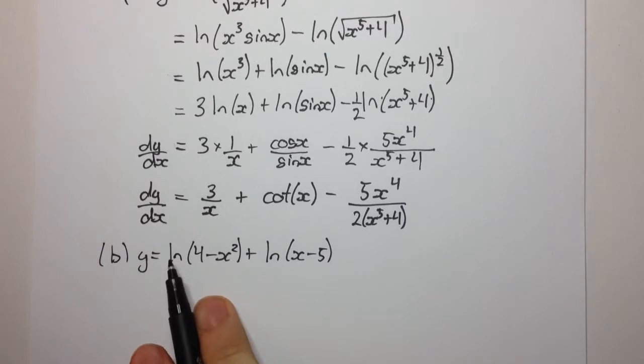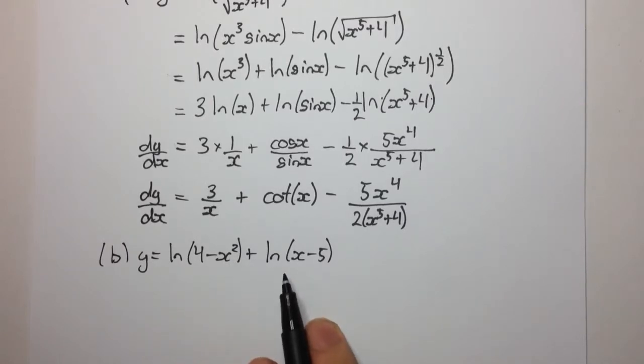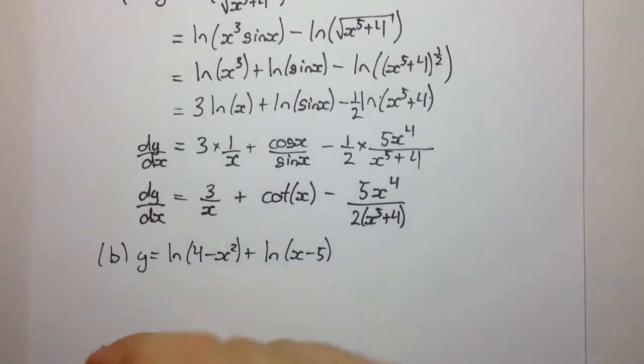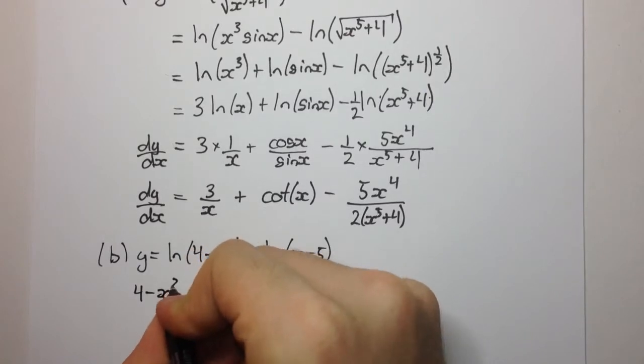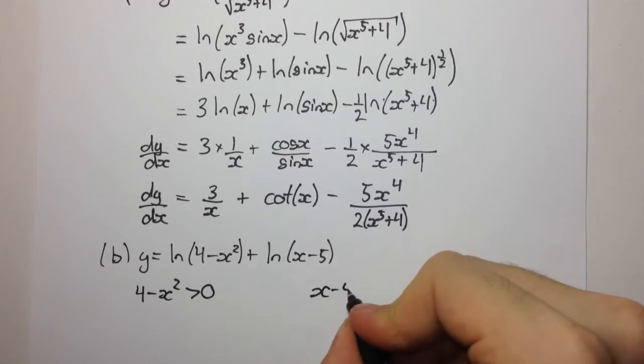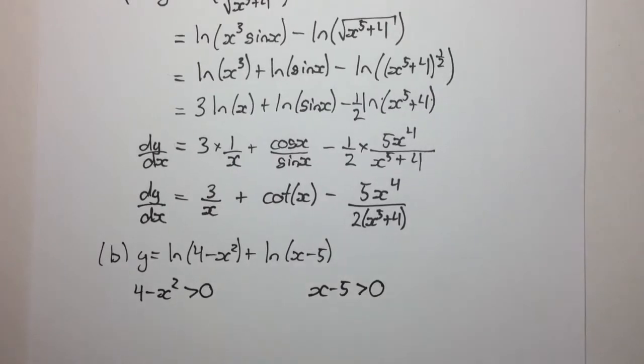Let's have a look at this. We have our function as ln of 4 minus x squared, and we have ln of x minus 5. So, first of all, what do we know about ln, or logs in general? Well, what's inside a log, it must always be greater than zero. Otherwise, the log is undefined. We'll be working with complex numbers, which we don't study in the 2-0 or 3-0 courses. So what do we know? We know that 4 minus x squared must be greater than zero, and we know that x minus 5 is also greater than zero.